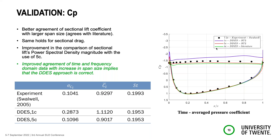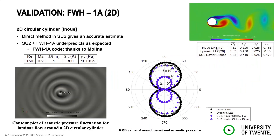This all concludes that we are okay with our DES simulation. We can match the experimental data, and we were confident with the parameters and settings, so we proceeded to switch to the Ffowcs Williams-Hawkings analogy.